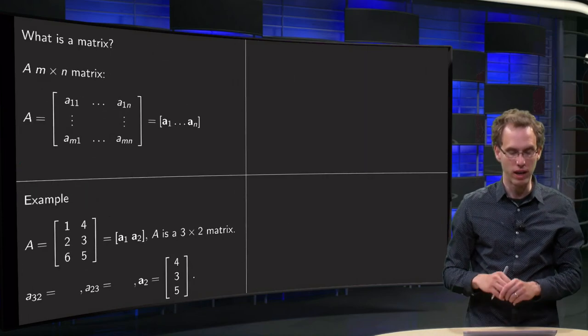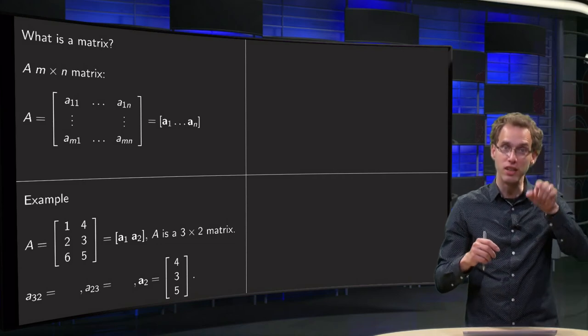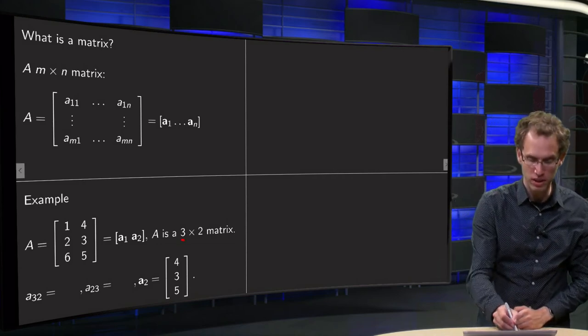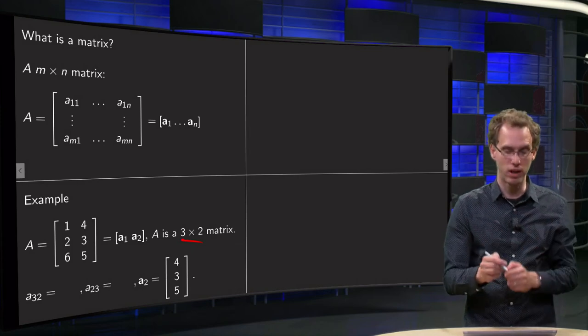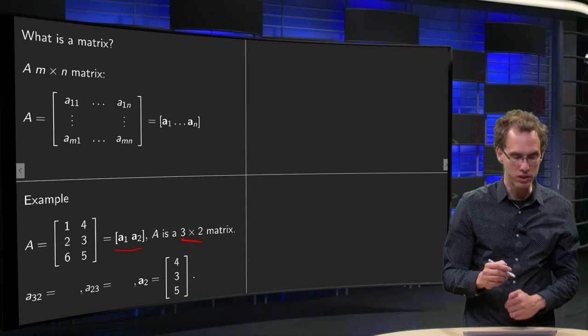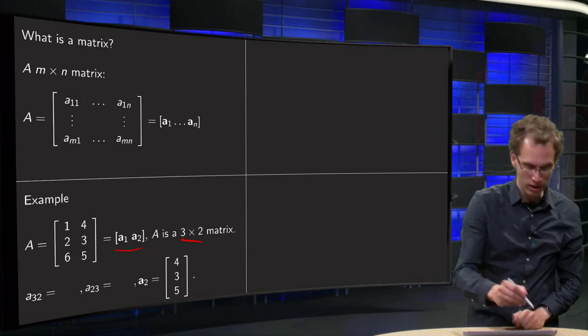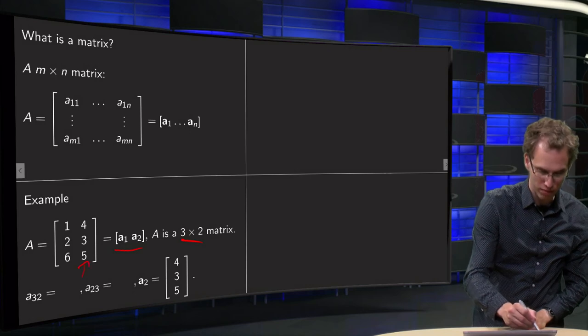So let's do one example. Here we have our matrix A, height is 3 and width is 2, so we have a 3 by 2 matrix. So you could write it also as a1, a2 and let's take a look at the numbers. What is a32? So we go to 1, 2, 3 and then 1, 2, so a32 we arrive at the 5 over here.